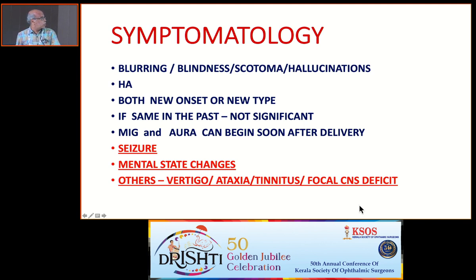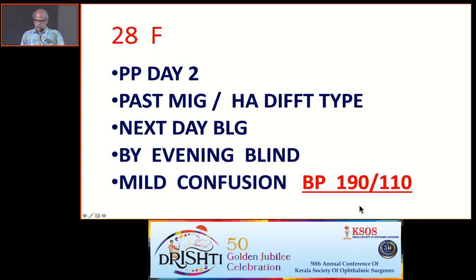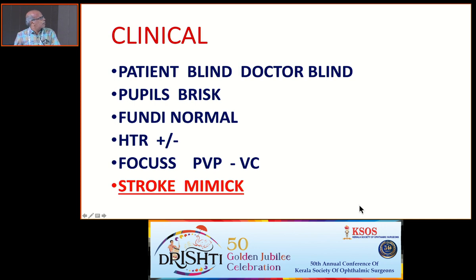The next group of symptoms — seizure and mental state changes — may not come to the ophthalmologist. A typical case: a 28-year-old female, postpartum day 2, with past history of migraine, started getting a different type of headache. Next day blurring, and by evening she was completely blind, with mild confusion and disorientation; BP was 190/110. Clinically, the patient was blind but pupils were brisk — unlike retrobulbar neuritis where you get APD and color vision defect. Whenever pupils are brisk, focus on the posterior visual pathway, the occipital lobes and visual cortices. You may get hypertensive retinopathy changes grade 1 to 4.